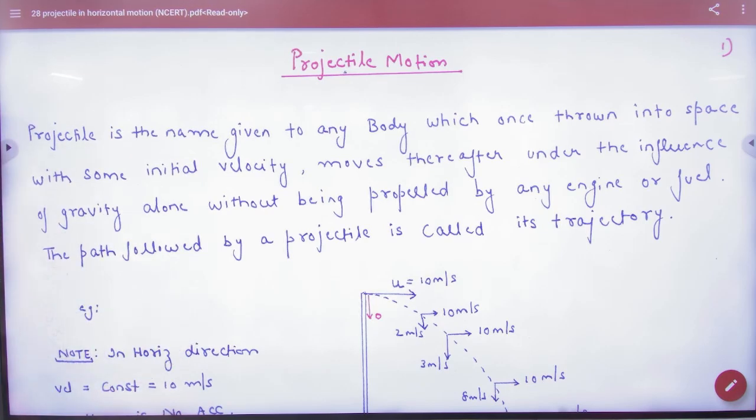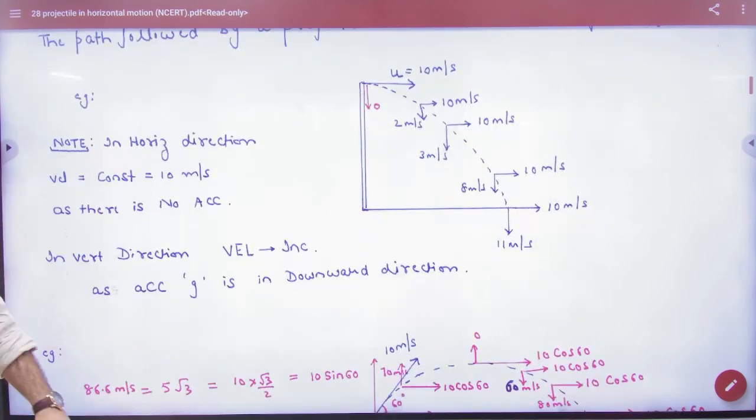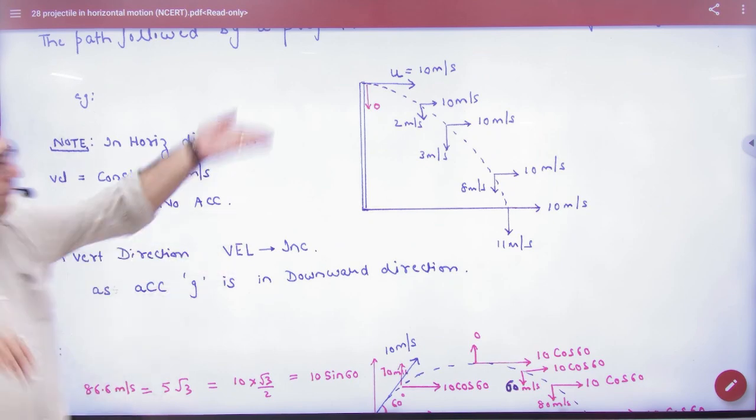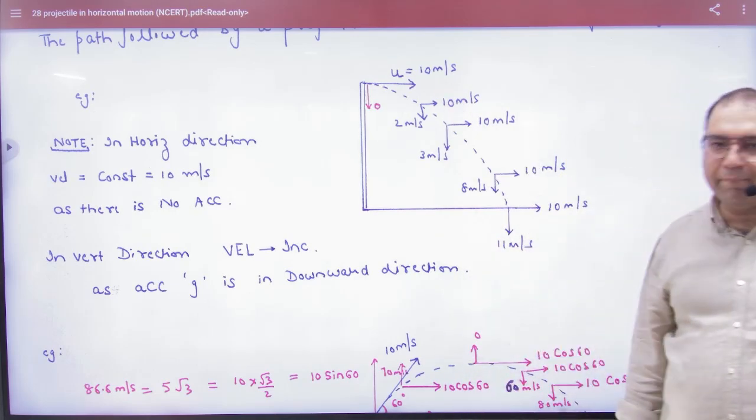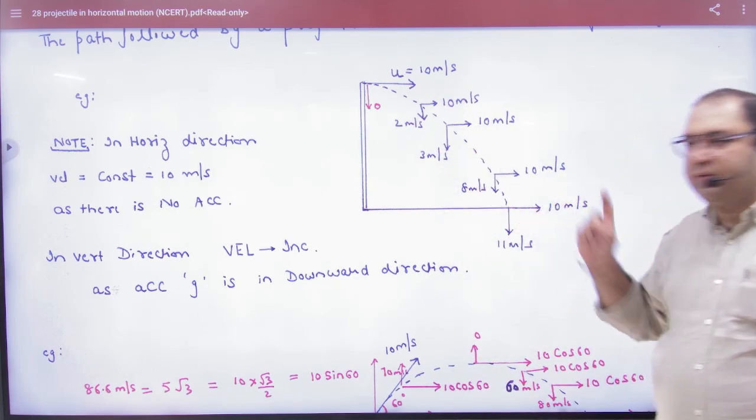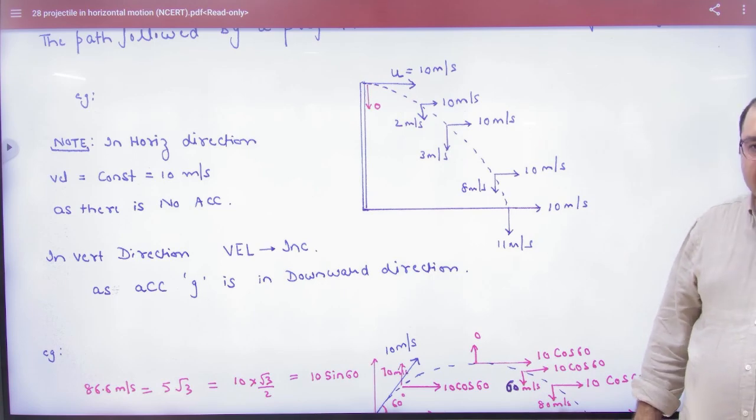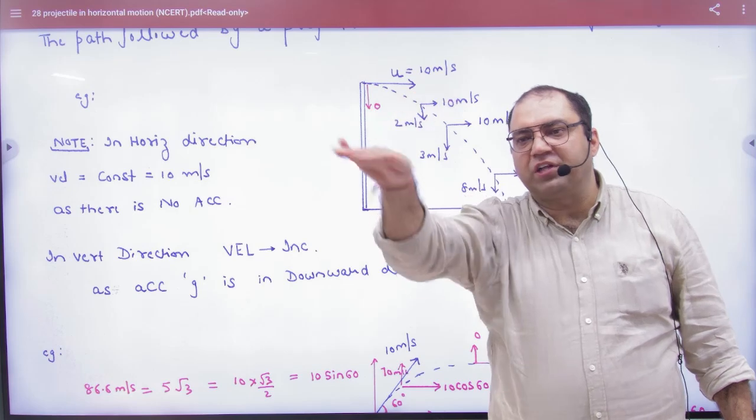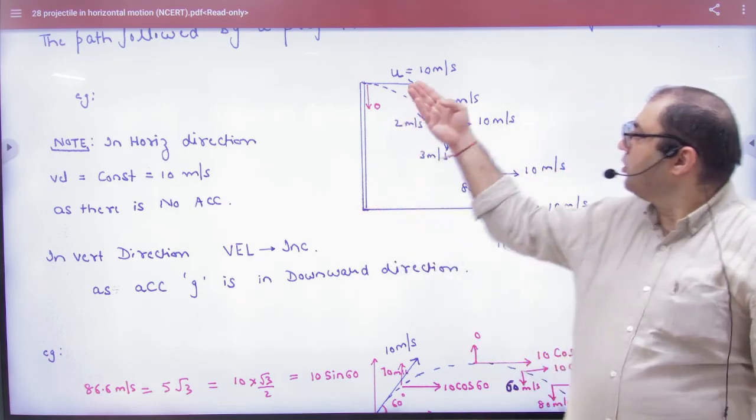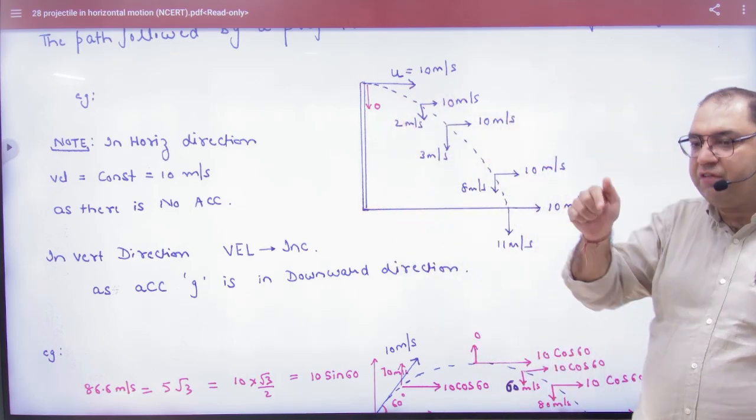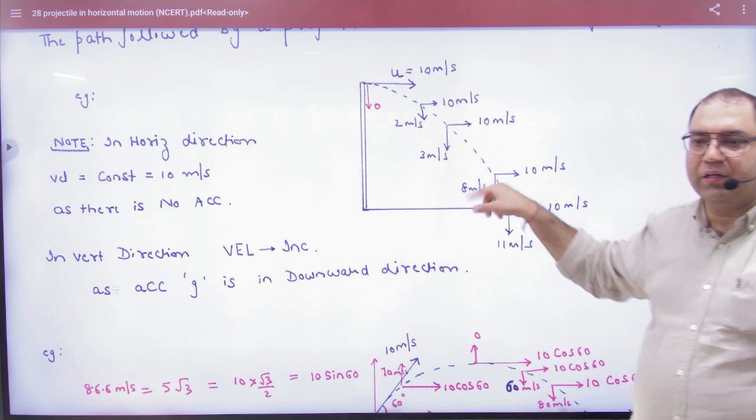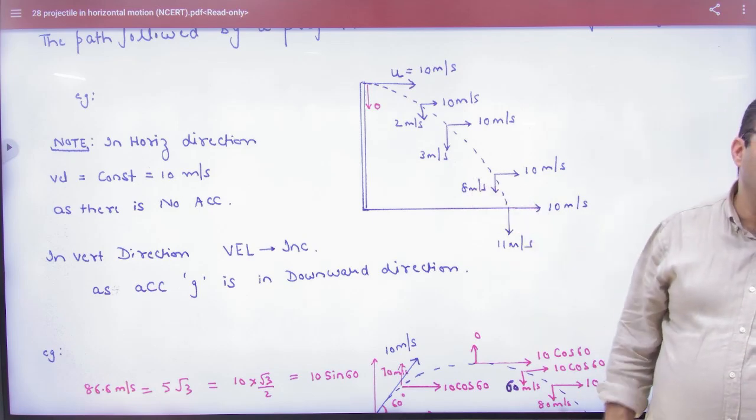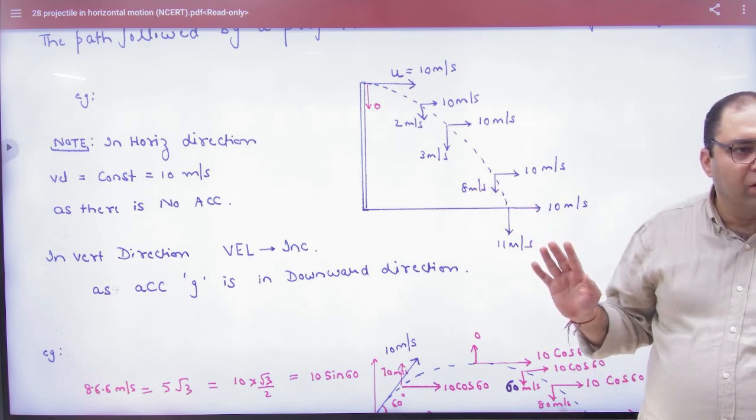That is what we have done at the top of the building. If we project a body with velocity of 10, then it will make a parabolic path here. What did we decide? That the horizontal velocity will remain same - 10, 10, 10. Initial vertical velocity is 0, and this will increase. So the point is clear.